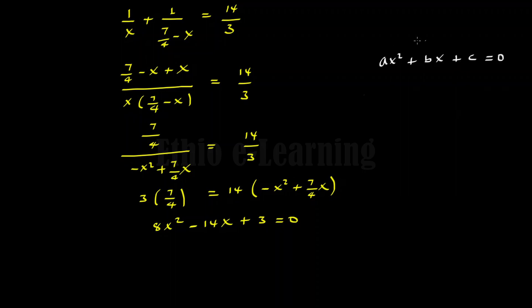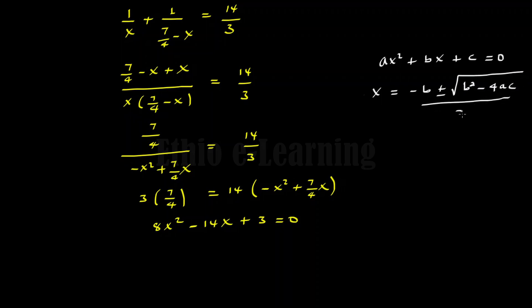Using the quadratic formula: x is equal to negative b plus or minus the square root of b squared minus 4ac, all over 2a.